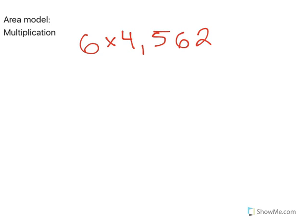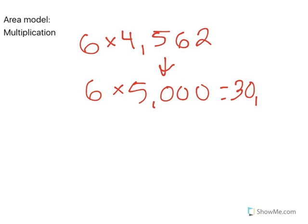I'm going to round 4,562 to 5,000. 6 times 5,000 is 30,000. So the final product of 6 times 4,562 should be pretty close to 30,000.